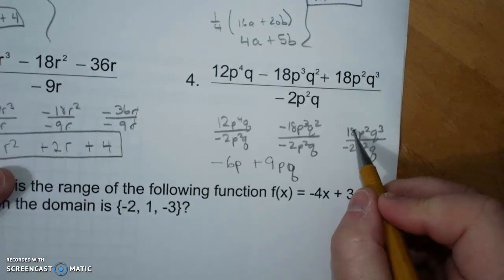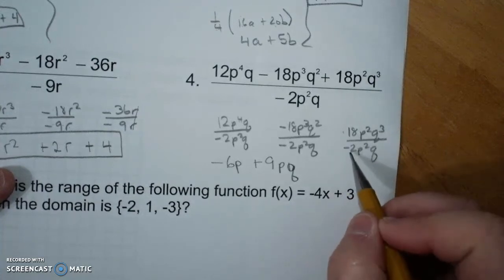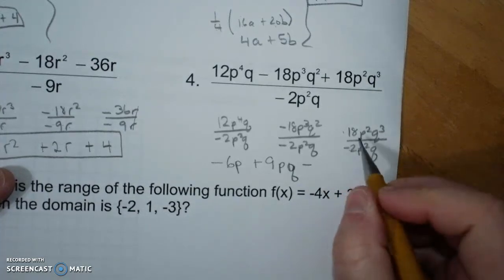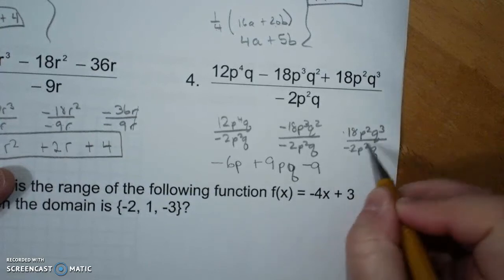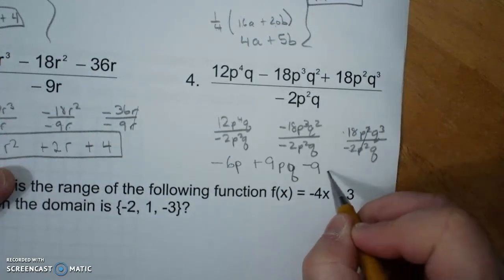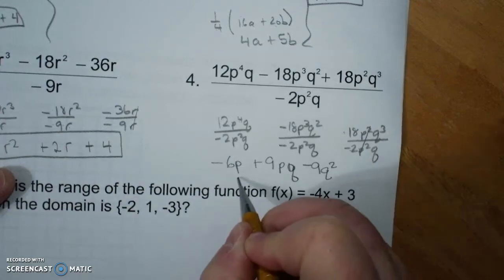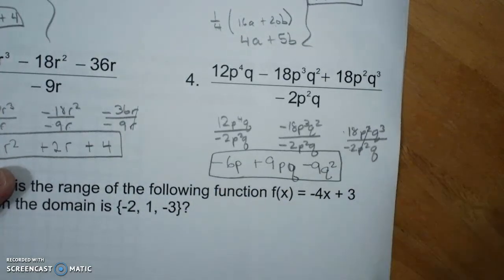18 divided by... Oops. Positive divided by a negative is a negative. 18 divided by 2 is 9. P's go away. Three up there, one down there. Two stays. There is your answer.